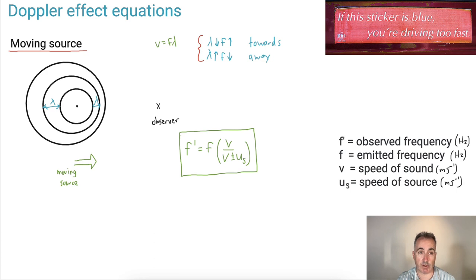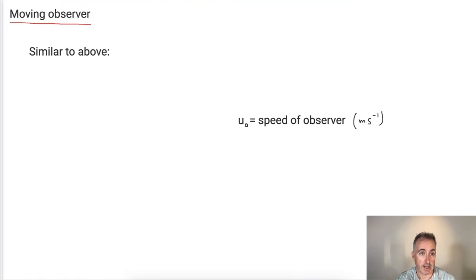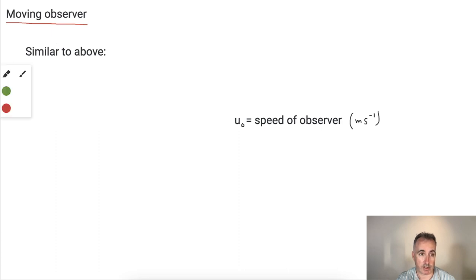So this is the equation at least we have for a moving source. Now for a moving observer, it's very very similar to above, except we've got just a slightly different equation here.